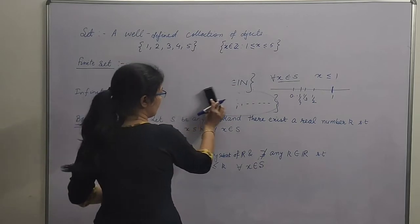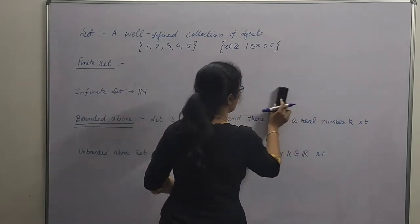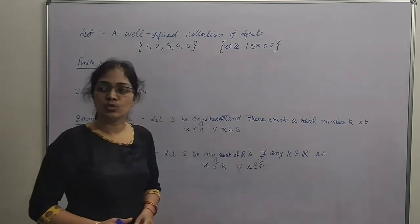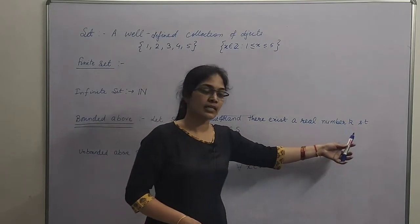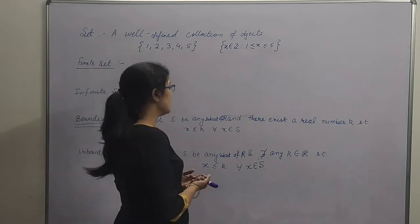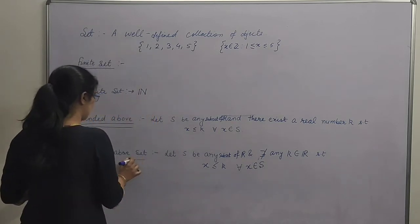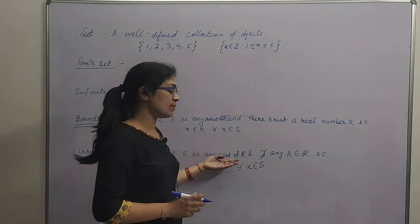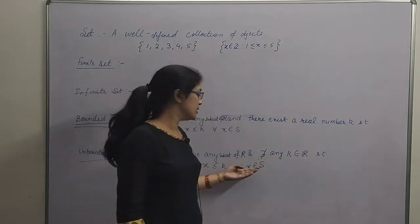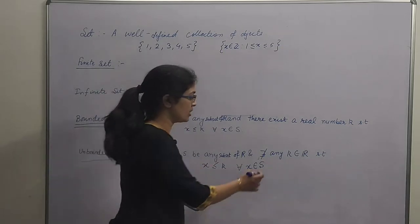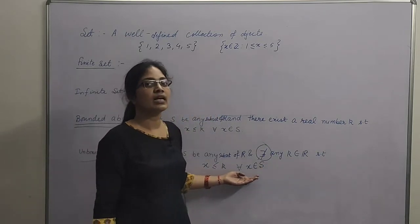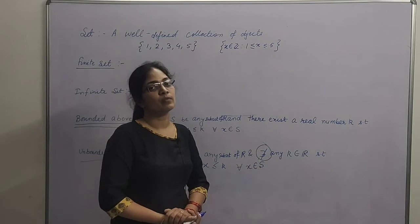So the meaning of bounded above: agar hume kaisa real number find out kar sakein such that set ke sare elements usse chhote ho jayen, then we say that this is an upper bound and S is bounded above. Now next is unbounded above set. Agar S koi bhi subset hai real numbers ka, aur hume aisa koi real number nahi milta jisse is set ke sare elements chhote ho jayen — there does not exist any k such that all elements of this set are less than that number — then that set is not bounded above.